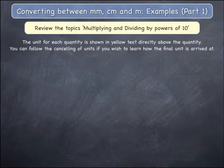In the following examples, the unit for each quantity is shown in yellow text directly above the quantity. This will show you how the units cancel.